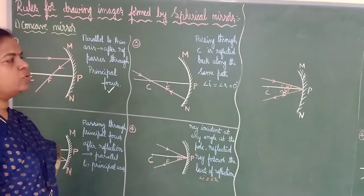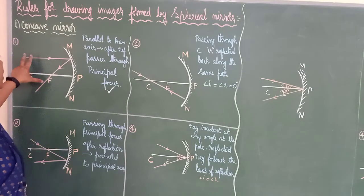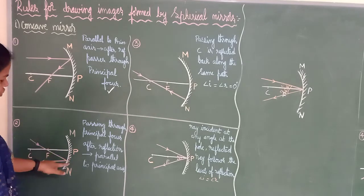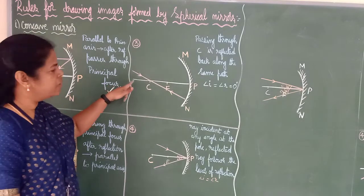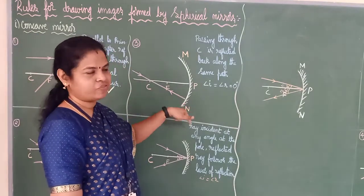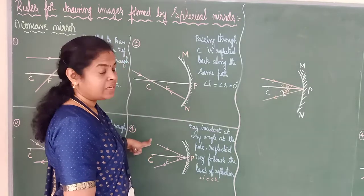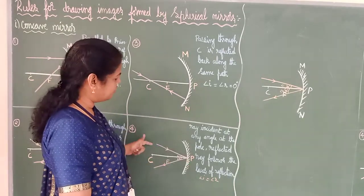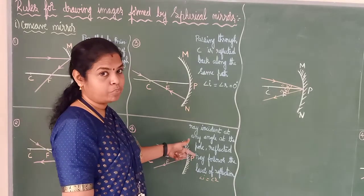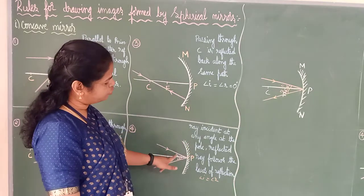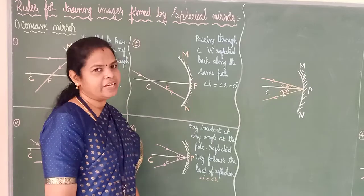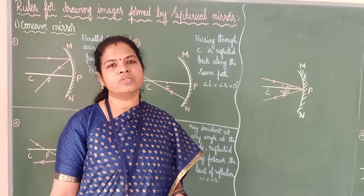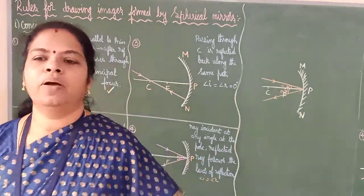So four rules — very easy rules. Practice them. First: when the ray of light is coming parallel to the principal axis, after reflection, it will come through the principal focus. Second: when it is coming through the principal focus, after reflection, it will come parallel to the principal axis. Third: when it is passing through the center of curvature, after reflection, it will come back in the same path. Fourth: it obeys the laws of reflection — angle of incidence is equal to angle of reflection, when a ray hits the pole. Next, we are going to see image formation — how an image will be formed using a concave mirror.